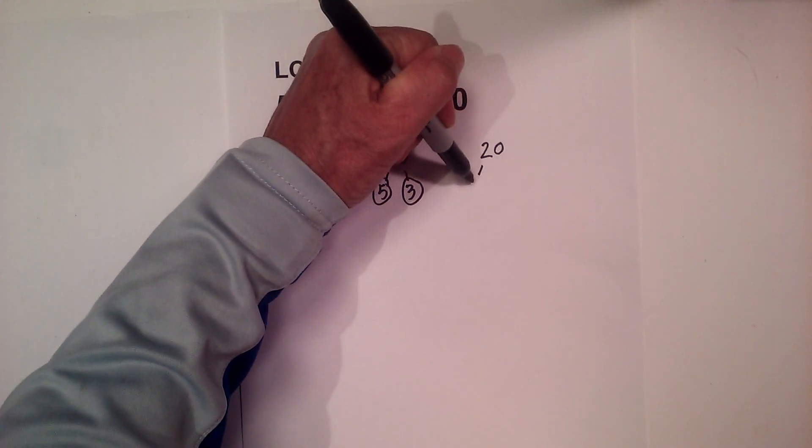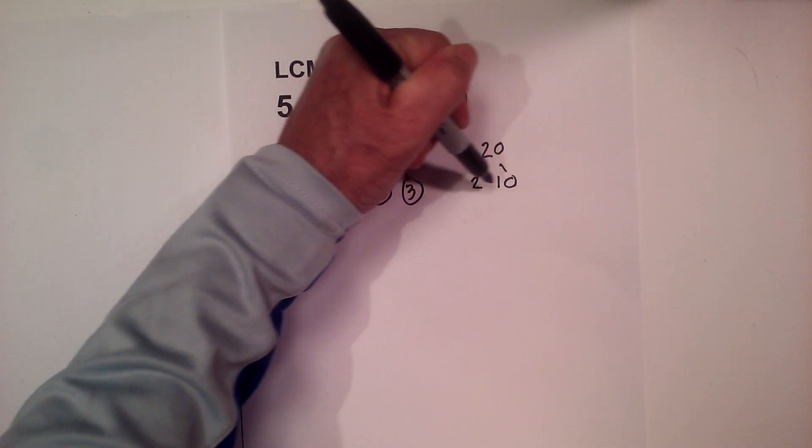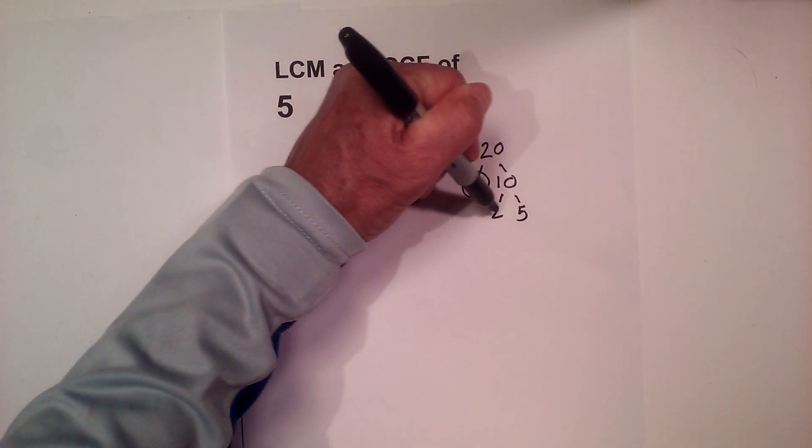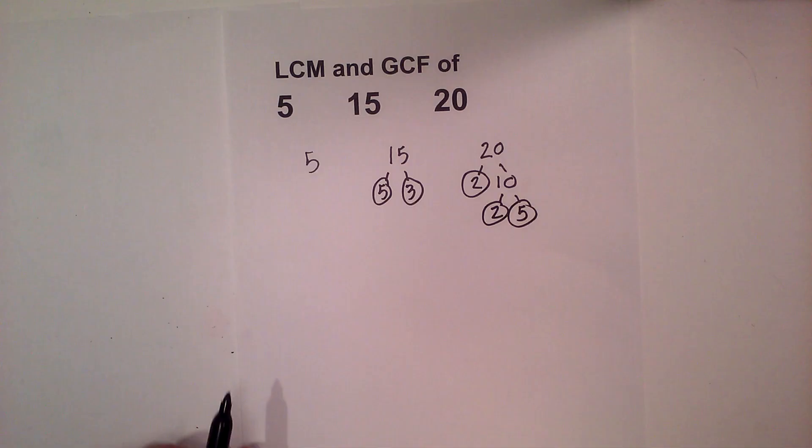And a factor tree for 20: 2 times 10, circle the 2 because it is prime, 2 times 5. I have circled both of these because they are prime.